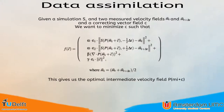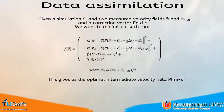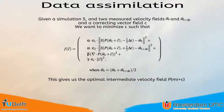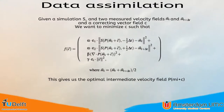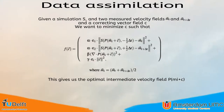For temporal interpolation, we use a slightly different optimization function. Here we want to find the optimal velocity field in between two measurements, so we update the first parameter of the optimization function. We add an additional step: the advection of the velocity field. By advecting the velocity field forward and backwards in time, we can find the optimal intermediate velocity field. For the advection, we use the semi-Lagrangian advection method introduced by Stam. Note that we model the blood as inviscid, as we want to simulate backwards in time — a common assumption regarding blood flow simulation.